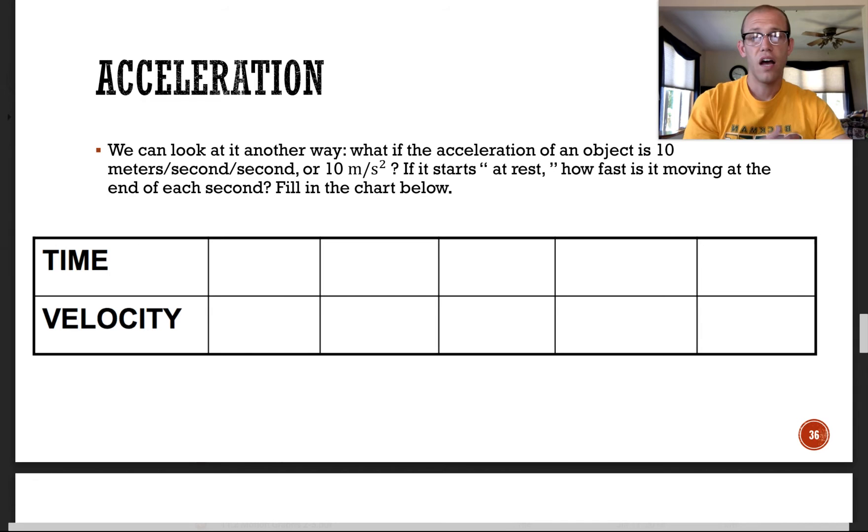So we can look at acceleration in another way. What happens if the acceleration of an object is 10 meters per second per second or 10 meters per second squared? If it starts from rest, how fast is it moving at the end of each second? So let's fill in this chart. So at zero seconds, if it's starting at rest, that means the object will not be traveling at all. It will be going at zero meters per second. One second later, it will have gained 10 meters per second.